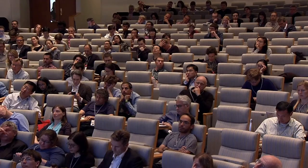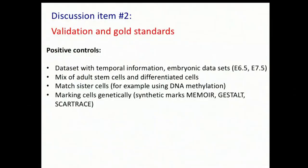In other cases, there might be a symmetric division where the two cells are very similar, and then these trajectories make a lot of sense based on the transcriptome. We all agreed that we need other ways to validate — temporal information. The transcriptome is the easiest because we already have it, but it's not directly telling us what happened in time.